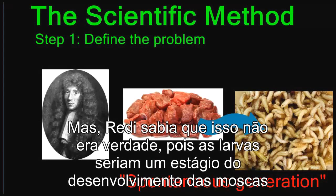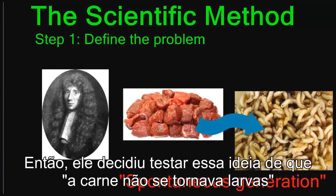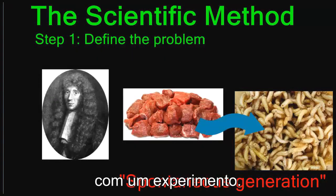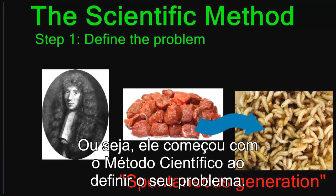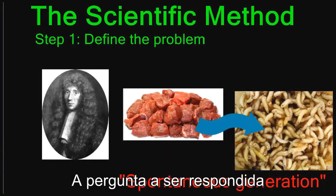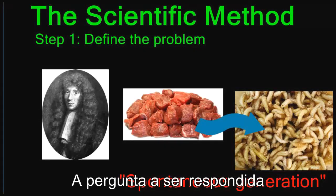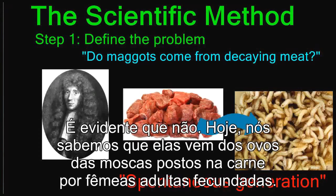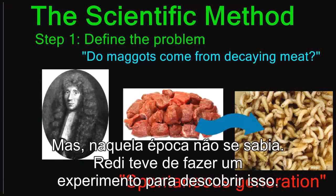Redi knew that that was not true — it just couldn't be. So he decided to test this idea with an experiment, starting the scientific method by defining his problem. The question that he asked was: do maggots come from decaying meat? Today we know that they don't, but in that time frame they had to do an experiment to figure it out.